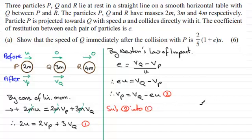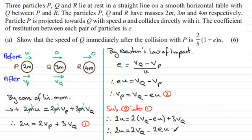Okay. And doing that we therefore have 2U equals 2 times VP. VP now is VQ minus EU. And then we've got plus 3 VQ. And if I expand the bracket we're going to get 2 VQ minus 2 EU plus 3 VQ. And if we just come down here.